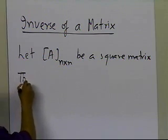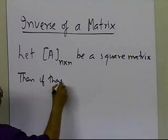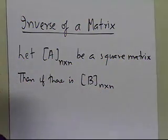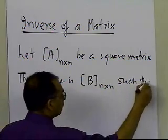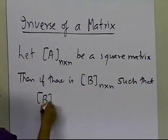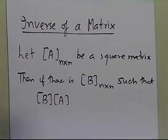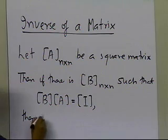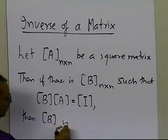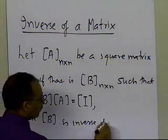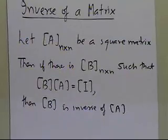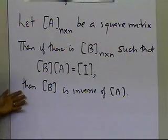Then if there is a matrix B, which is also an n by n matrix, such that B times A turns out to be the identity matrix, then B is considered to be the inverse of A. That's all you have to do to figure out whether one matrix is the inverse of another — that's the definition of an inverse of a matrix.